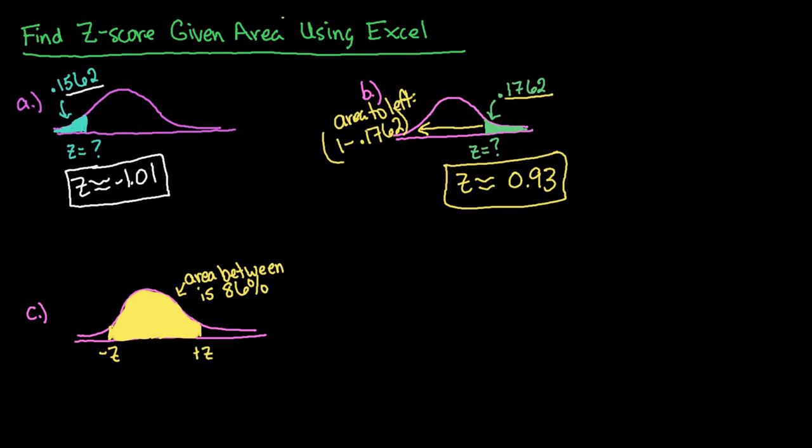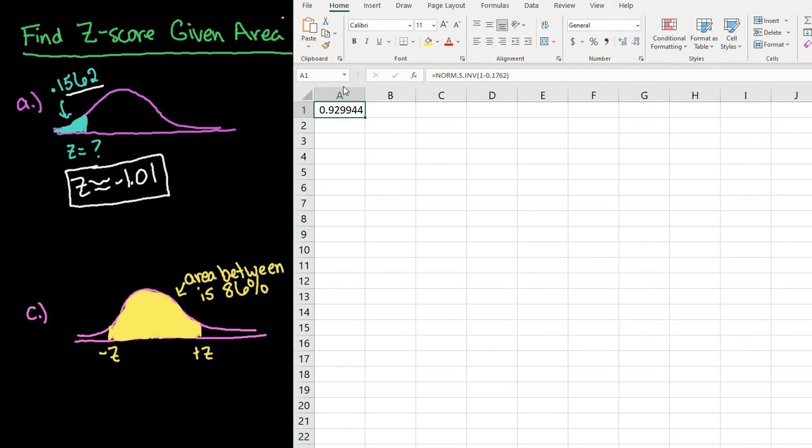Like I said, if you're getting this wrong, check to make sure that you did do area to the left. If you would have just put in the 0.1762, you would have got the negative z-score of 0.93.